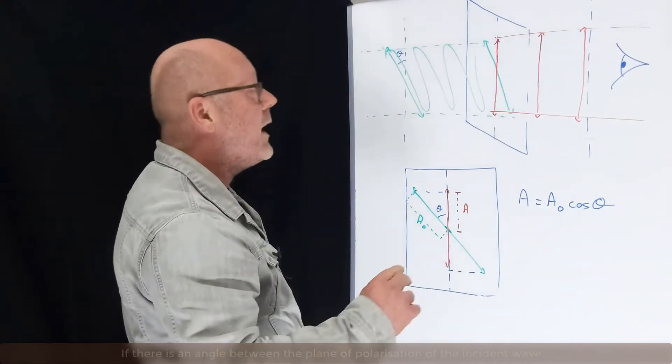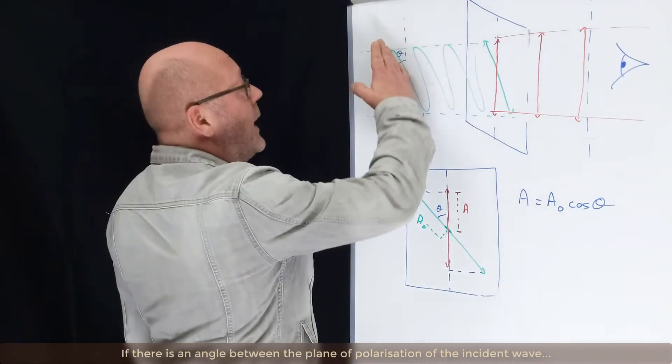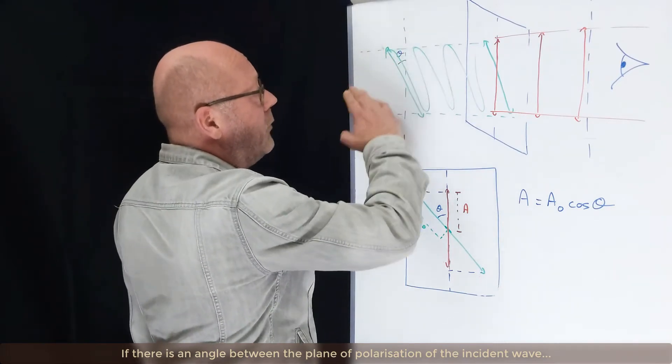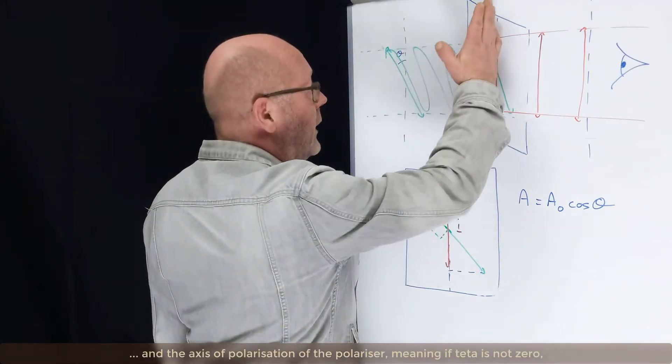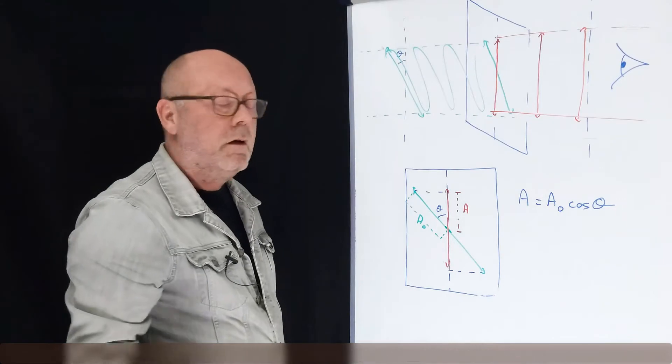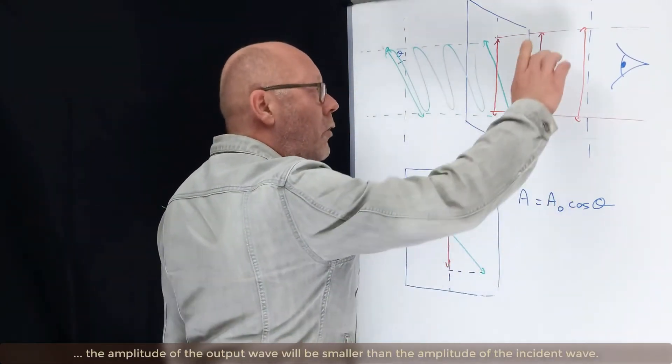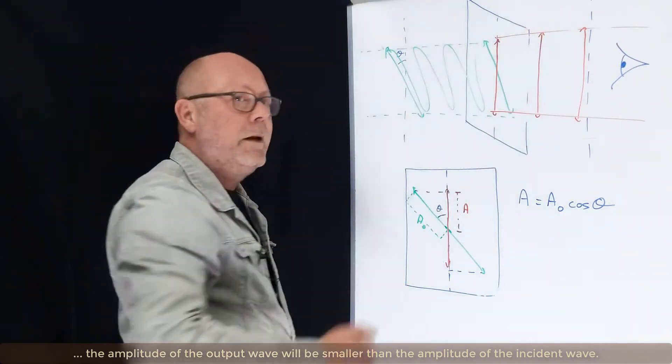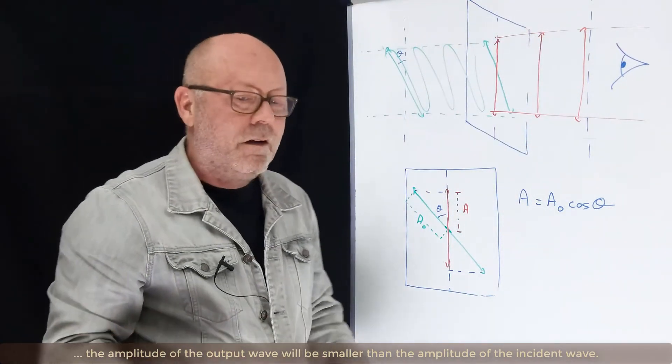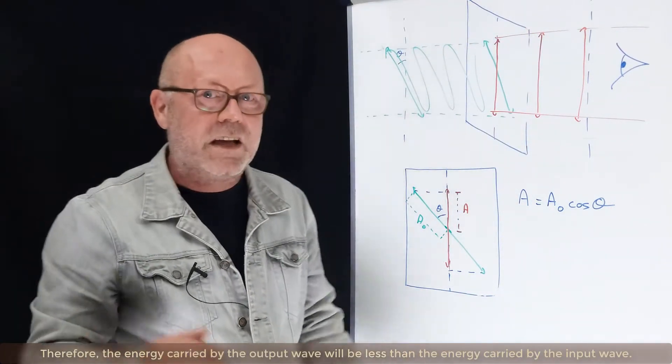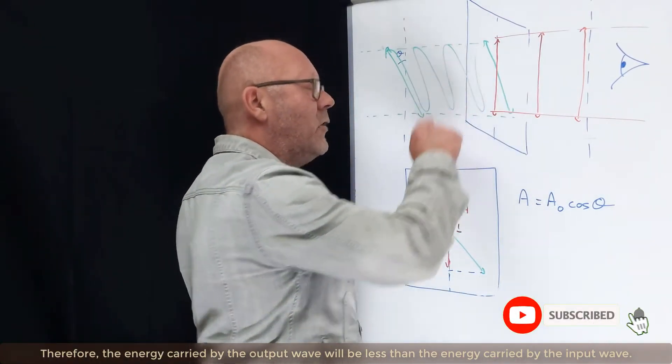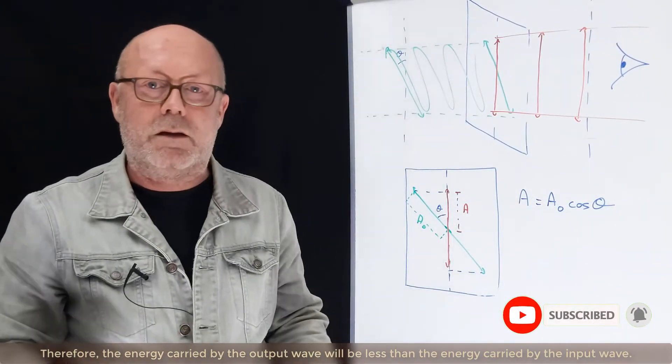So if there is an angle between the plane of polarization of the incident wave and the axis of polarization here, meaning if θ is not 0, that means that A is smaller than A0. The amplitude of the output wave will be smaller than the amplitude of the incident wave. Therefore, the energy carried by the output wave will be less than the energy carried by the input wave.